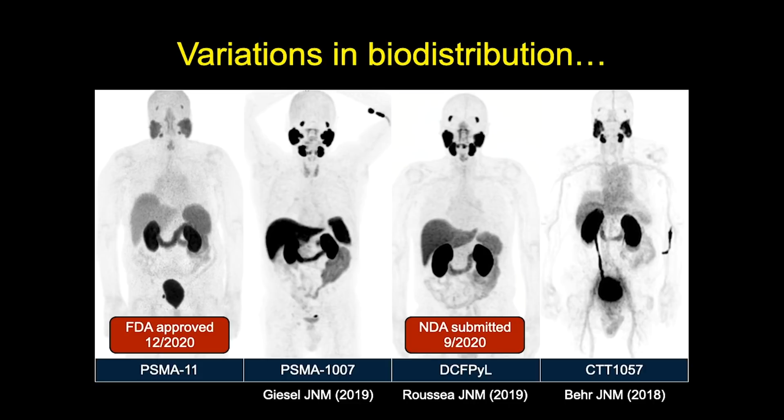PSMA-11 obtained FDA approval in December of last year, and there's a kit that should be approved later this month to help get PSMA-11 more widely available. DCFPYL submitted its application to the FDA in September of last year, and we're very hopeful it will get FDA approved at the end of this month. DCFPYL will be much more widely available because it's fluorinated and can be distributed in much larger quantities — hopefully the drug that most patients in the US are imaged with.